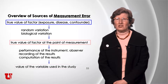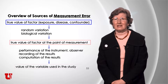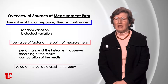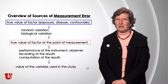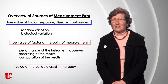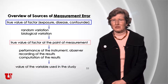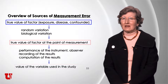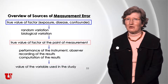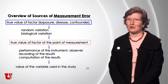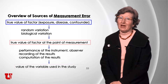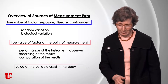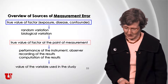Random variation, statistically, you just have to account for and be aware of. But at the point that you're measuring, the performance of the instrument and the observer, the quality of your study design, the attention paid to testing your methods before you scale them up — all of that is going to affect the quality of your data and the value of the variables you use in the study.